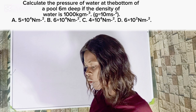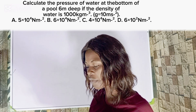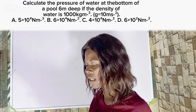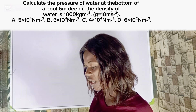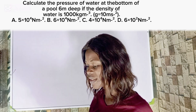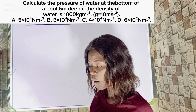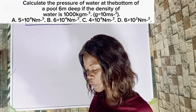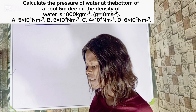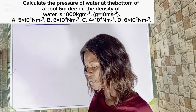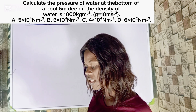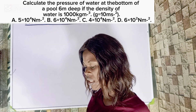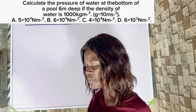Calculate the pressure of water at the bottom of a pool 6 meters deep, if the density of water is 1000 kilograms per meter cube, and g is given as 10 meters per second squared. Option A: 5 times 10 to the power 4 N/m². Option B: 6 times 10 to the power 4 N/m². Option C: 4 times 10 to the power 4 N/m². Option D: 6 times 10 to the power 2 N/m².